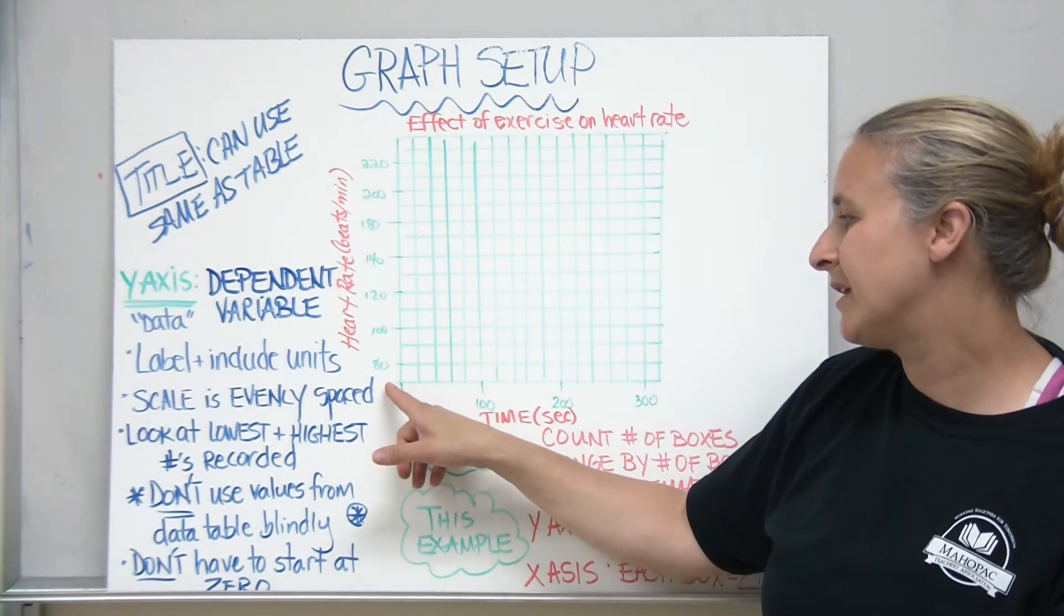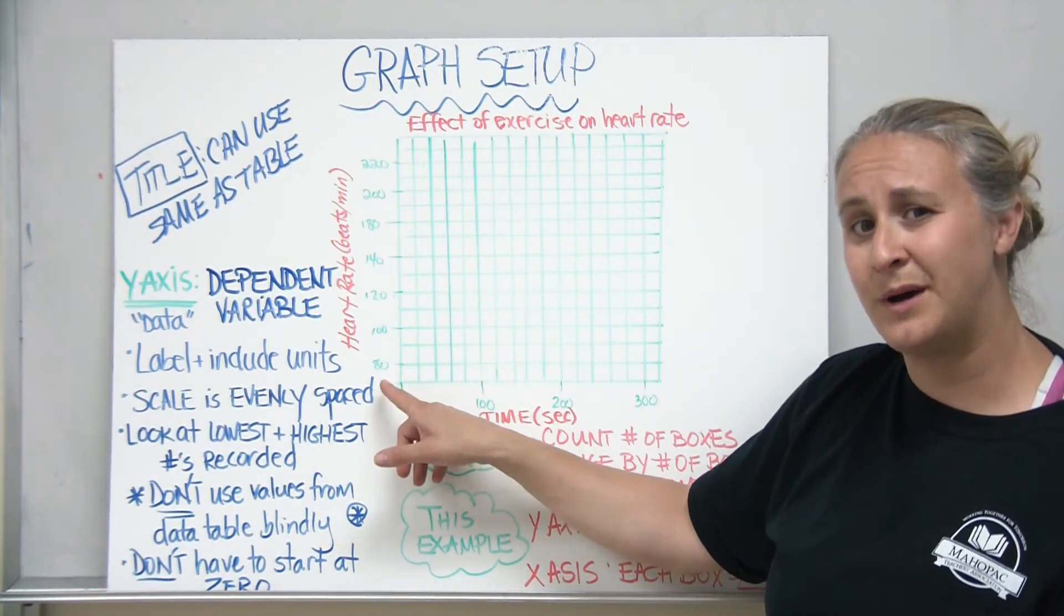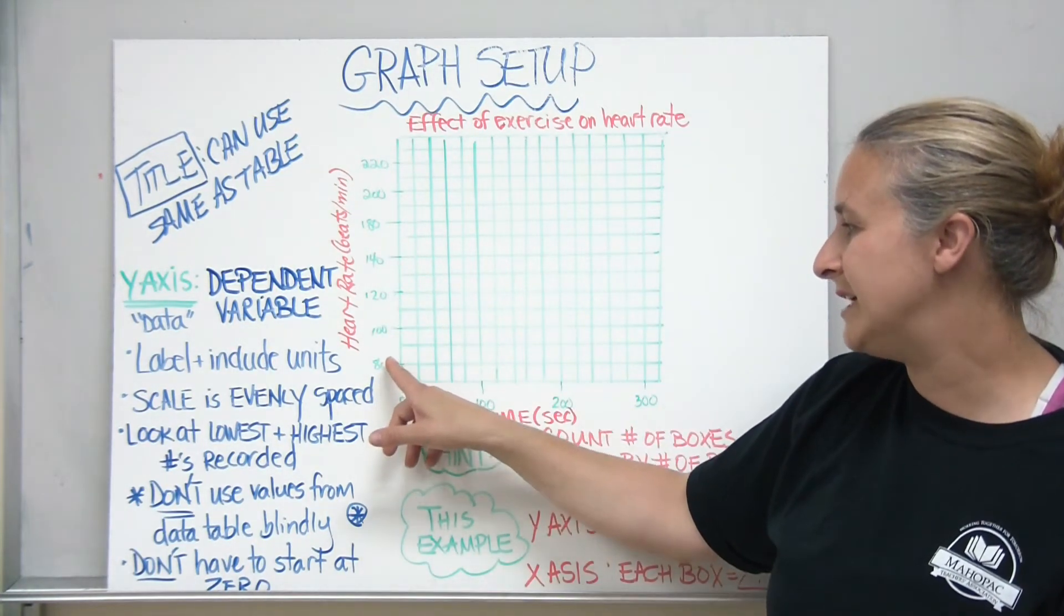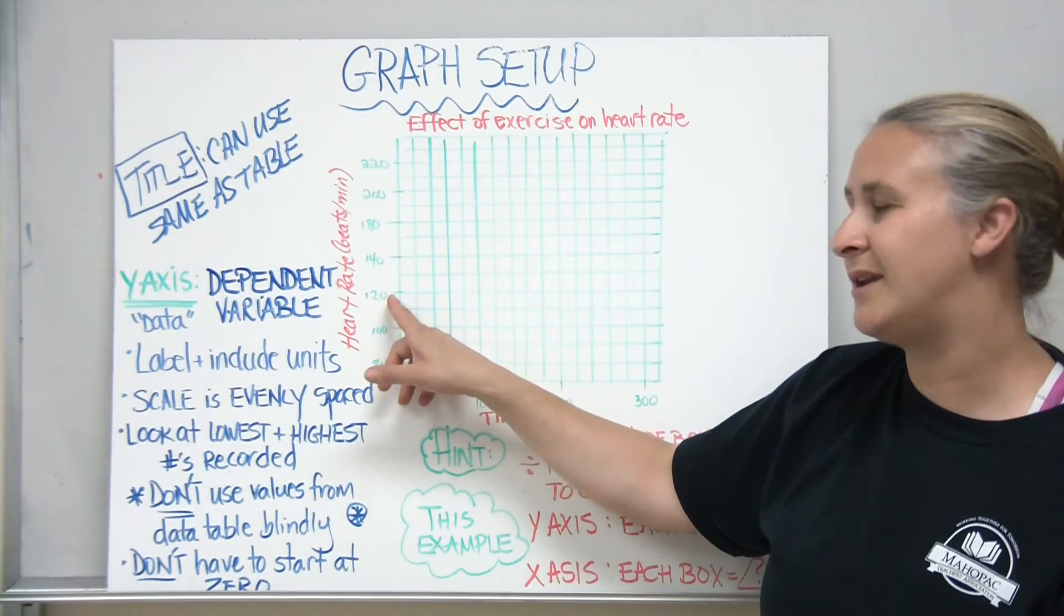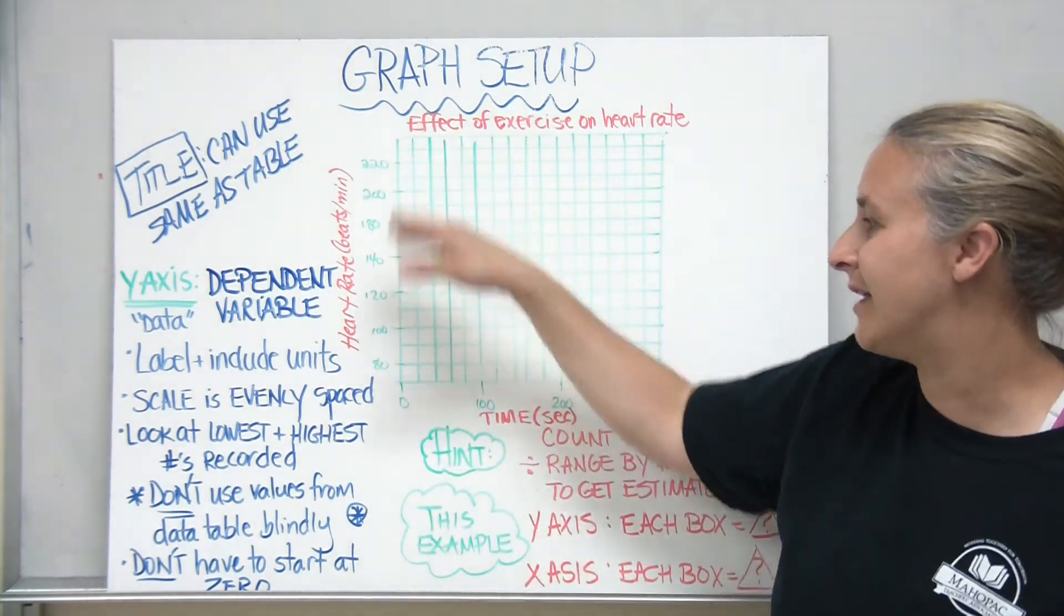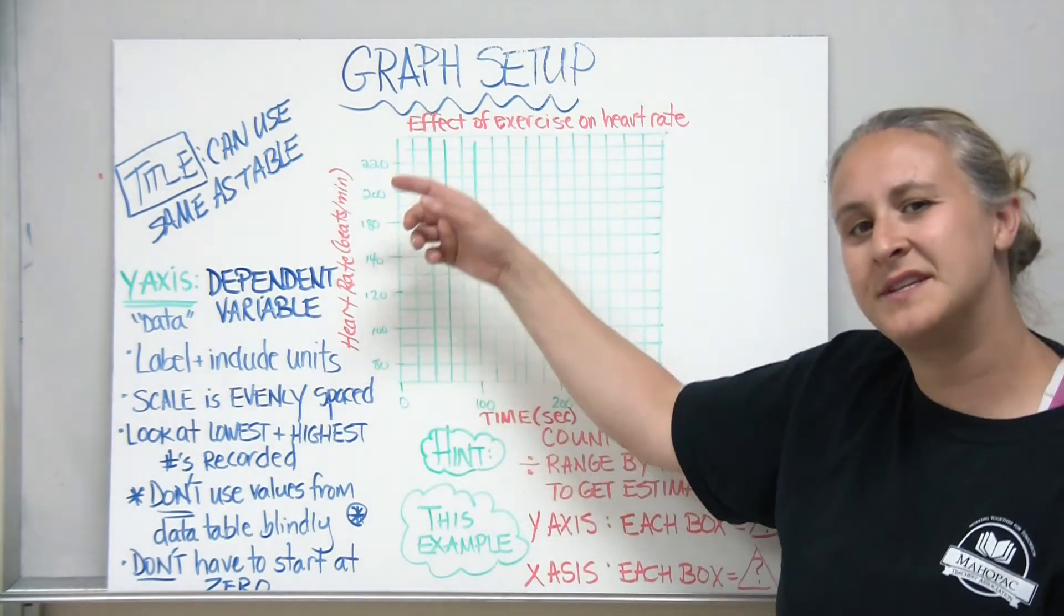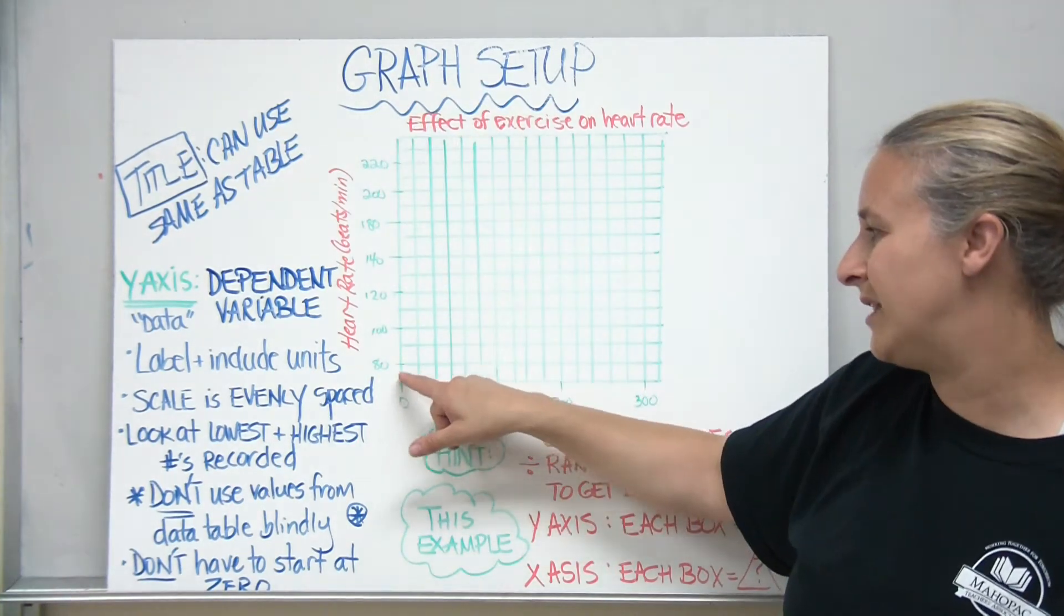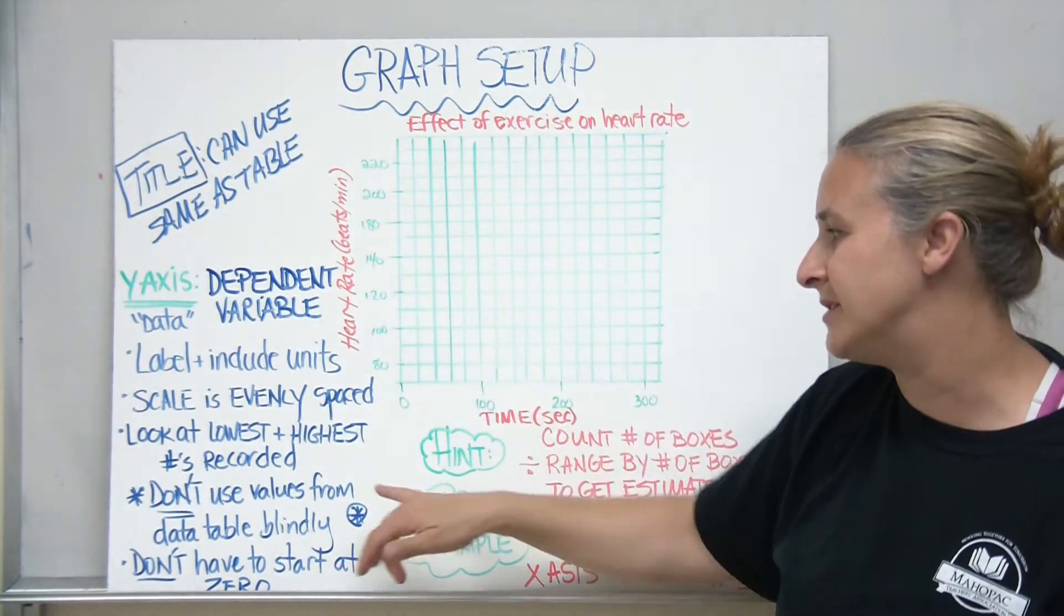The scale needs to be evenly spaced on your graph. So if you look at this scale, if I started at 70, each box is worth 10 beats per minute. I go up 70, 80, 90, 100, 110, 120, and so on until I go up to the top. You don't have to label every box. You can skip boxes. It just has to be that every single box has to be worth the same amount.